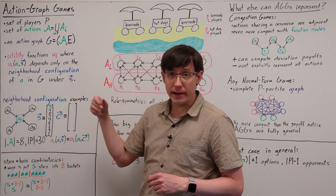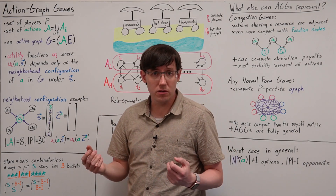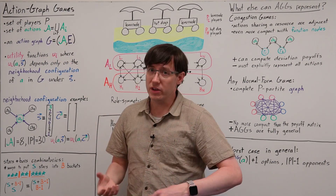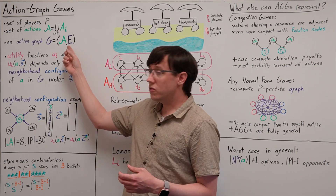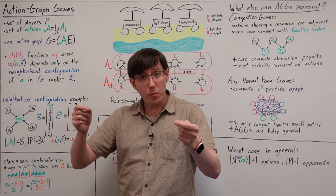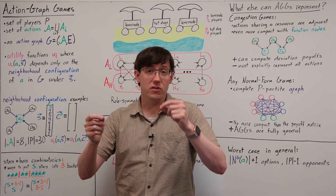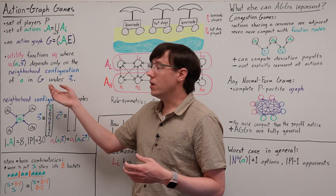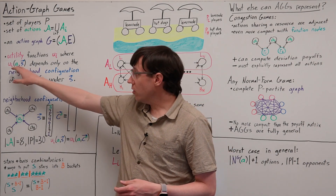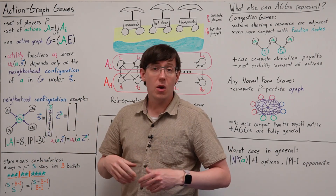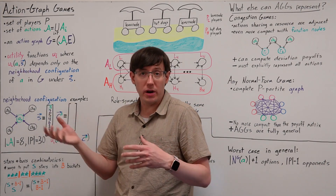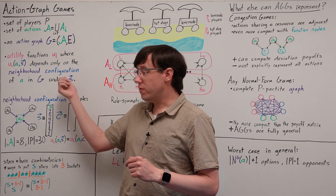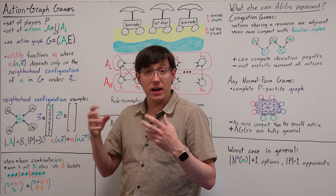In an action graph game, we have a set of players, and each player has a set of actions, but then the combined set of all actions for all players form the nodes in an action graph. In that graph, there is an edge from one action to another if the number of players choosing the first action influences the payoff to someone choosing the second action. This allows the utility functions to depend only on the neighborhood of an action in the action graph. Whereas in a normal form game the utility function can output a different payoff depending on any attribute of the profile, in an action graph game only the configuration in the neighborhood of an action can influence the payoff.